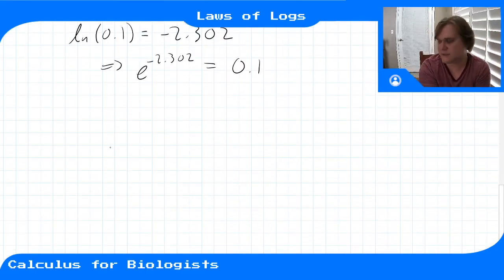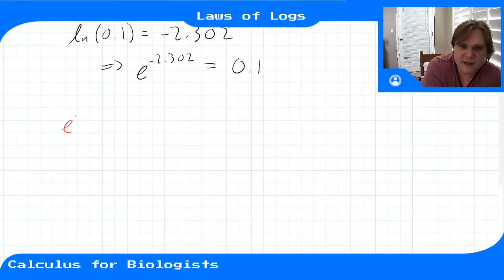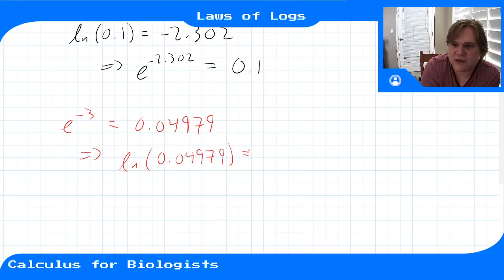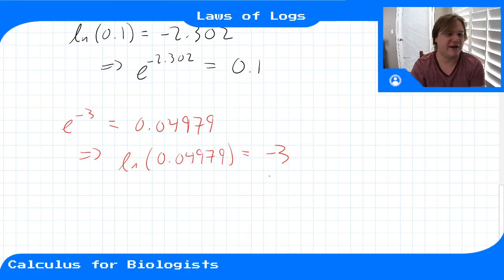If I do one more example, e^(-3), plug that into a calculator, I'll get 0.04979. And what that means is that if I took the natural log of this number on the right, it would give me -3 as the value of that log.